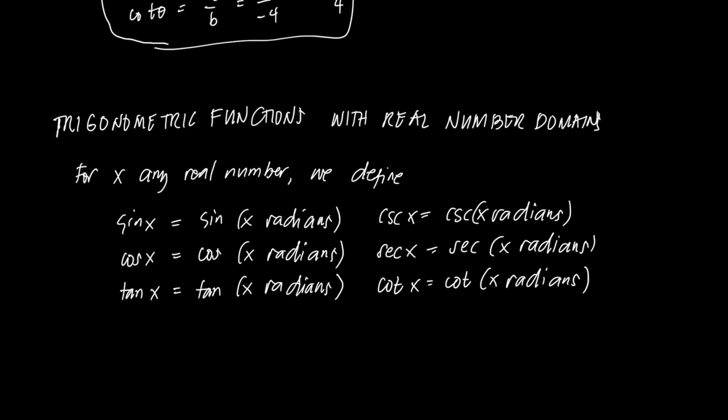Next is trigonometric functions with real number domains. For x any real number, we define sine x equal to sine x radians, cosine x equal to cosine x radians, and so on and so forth. We just do not write radians for simplicity. So when we encounter sine x or sine 5, it means sine 5 radians. That is the general concept of trig functions.